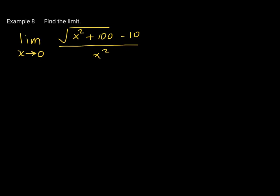Consider the expression: the square root of (x² + 100) minus 10, all over x², and we're finding the limit as x approaches zero. We cannot use direct substitution here. The numerator is not a polynomial because of the square root (a power of one-half, which is not a positive integer), so this is not a rational function. And even if it were, you cannot plug zero in because the denominator would be zero — the whole expression would be undefined.